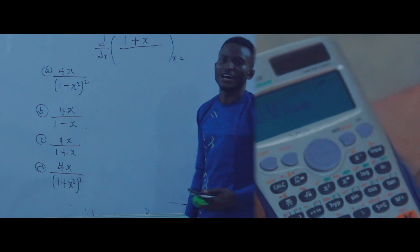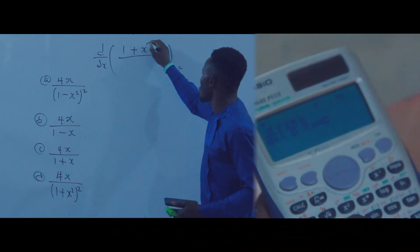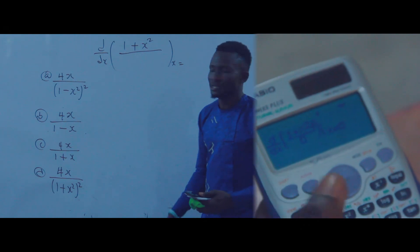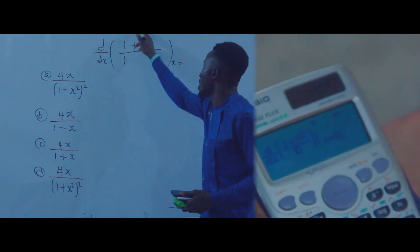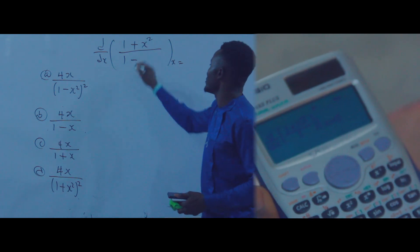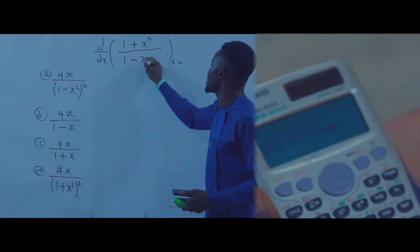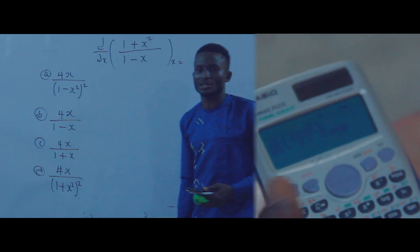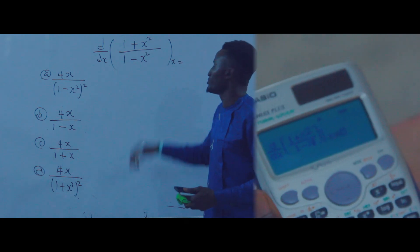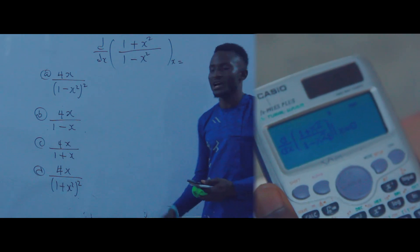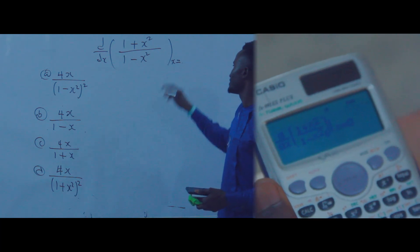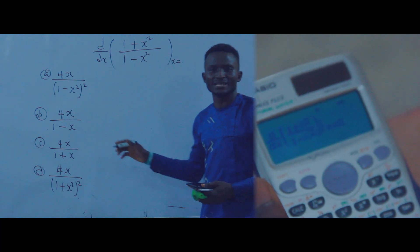Press alpha X then press square for the numerator (1+x²). Come to the denominator, press 1, press minus, then press alpha and the closed bracket to get x, then press square for the denominator (1-x²).